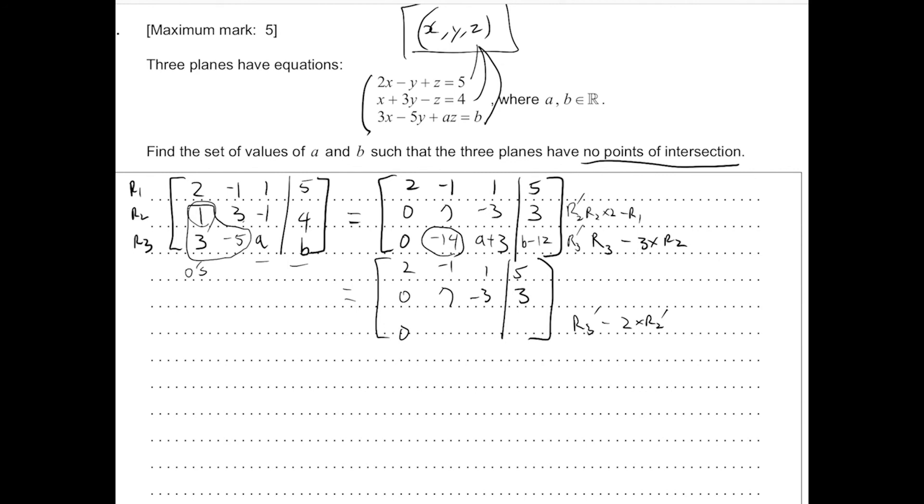So minus 14. Actually, we just add. So minus 14 plus 2 times 7, that's a 0. A plus 3 plus 2 times negative 3. So that's A plus 3 minus 6. So that's A minus 3. B minus 12 plus 6. So B minus 6.